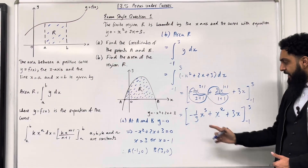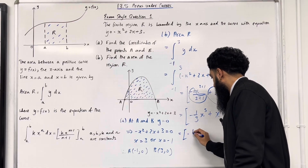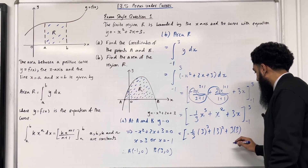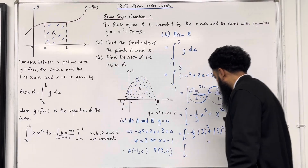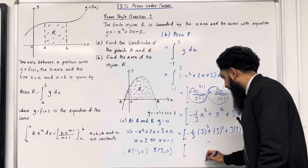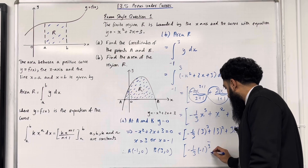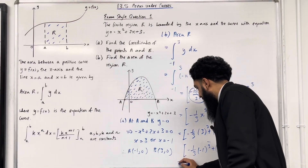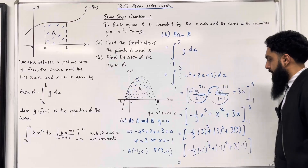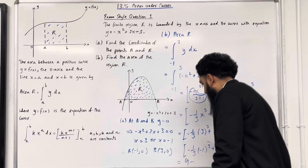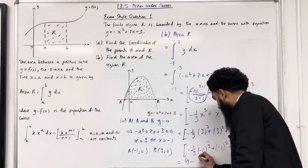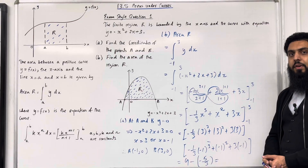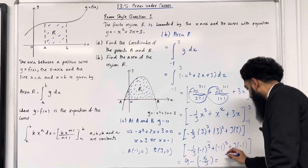Now I need to substitute the upper limit — replace the x's with 3. So: (-1/3)(3³) + (3²) + 3(3), take away, substitute the lower limit — replace the x's with -1: (-1/3)(-1)³ + (-1)² + 3(-1). The first square bracket simplifies to 9, minus the second square bracket. If I put this into my calculator, I get -5/3. So this is basically 9 + 5/3, which equals 32/3.